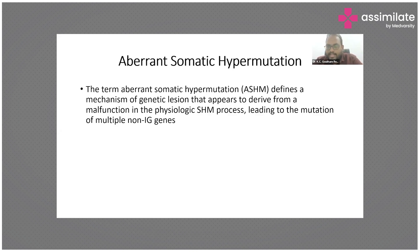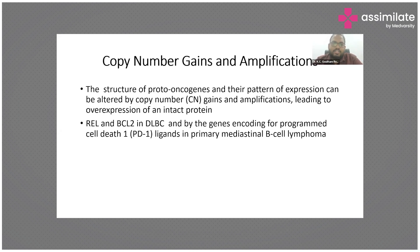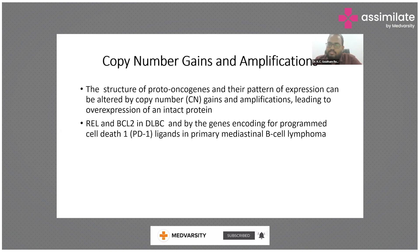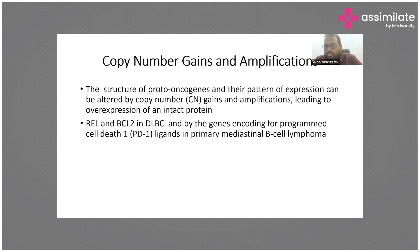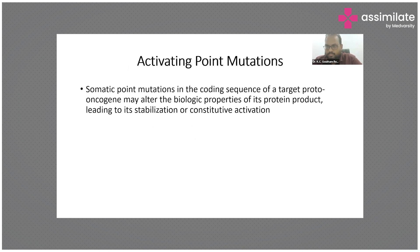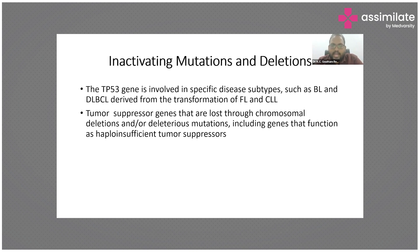Aberrant somatic hypermutations, discussed earlier, lead to increased malignancies. Regarding copy number gains and amplifications: proto-oncogenes are normally responsible for controlled cell proliferation, but when they are converted into oncogenes, cancer develops. This conversion can happen through copy number gains and amplifications, where excess genetic material produces abnormally more proto-oncogenes, driving cancer. Activating point mutations in proto-oncogenes can also convert them into oncogenes, causing cell proliferation. Inactivating mutations and deletions are additional mechanisms.